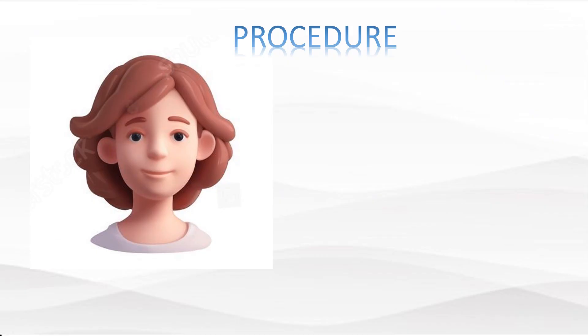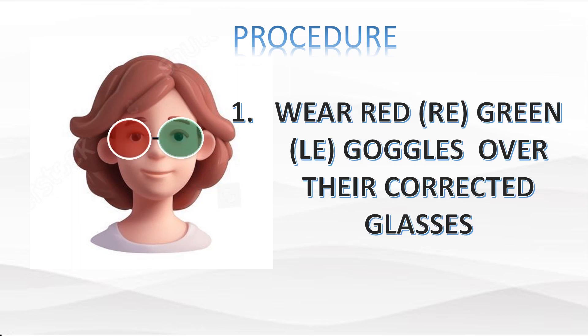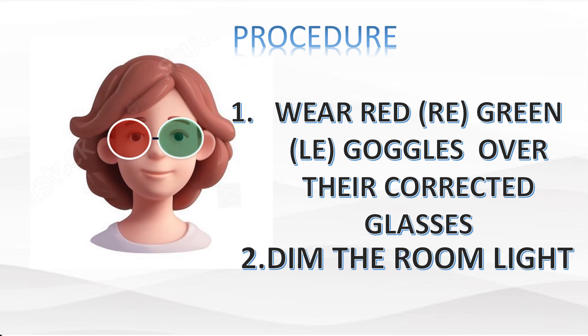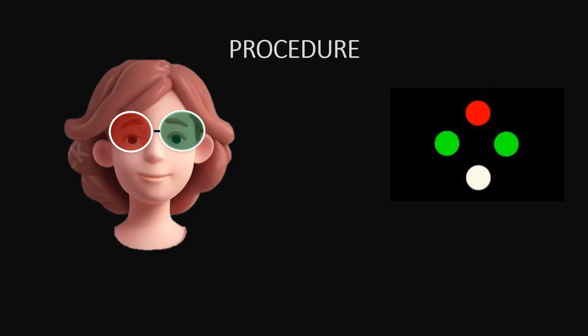The Worth Four Dot test can be performed at two distances, both for distant as well as for near. In both procedures, the patient is asked to wear red-green goggles with red on the right side and green on the left side. We have to dim the room lights for the procedure. The patient is asked to look at the Worth Four Dot instrument. The lights are arranged in a diamond formation with the red light on the top, two green lights on either side, and the white light at the bottom.